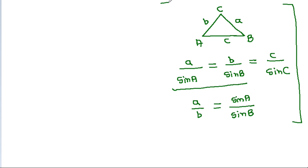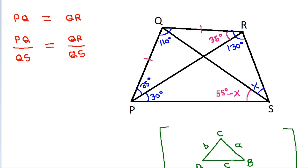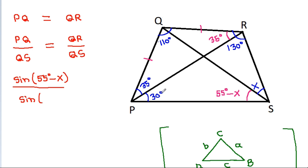So here, PQ divided by QS equals sin(55 degrees minus X) divided by sin(65 degrees), and QR divided by QS equals sin X divided by sin 130 degrees.